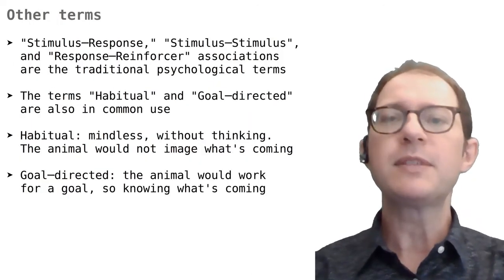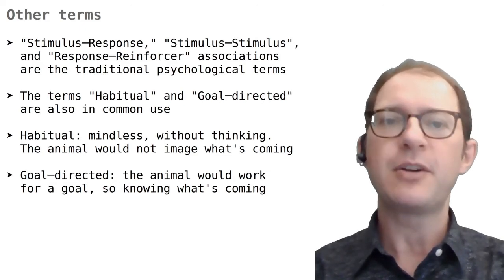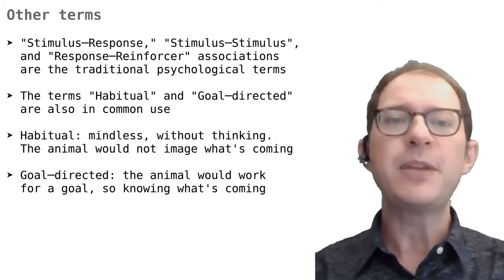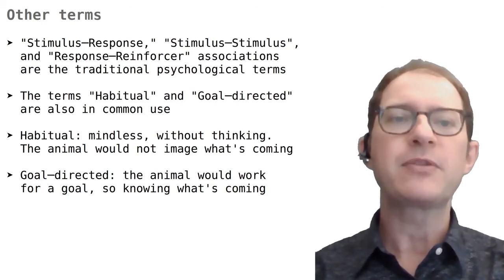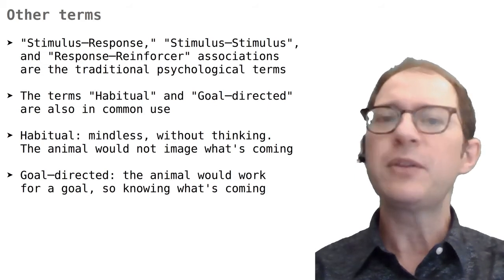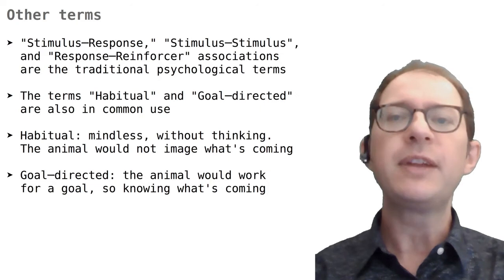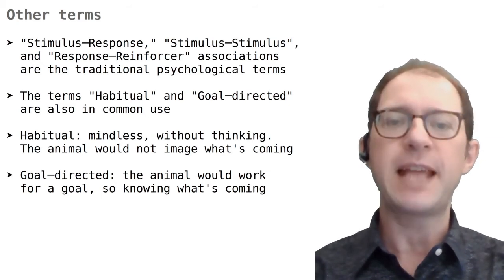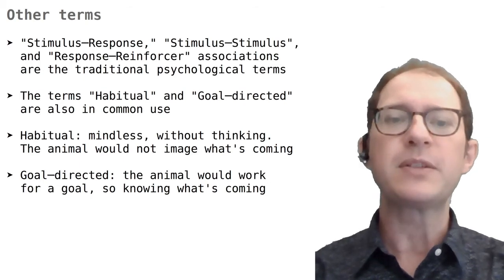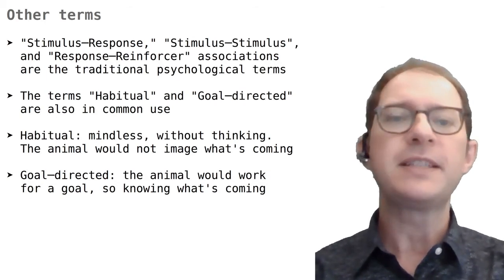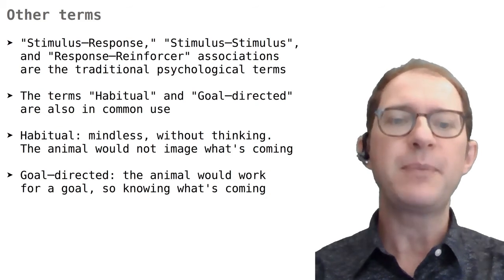The terms stimulus-response and stimulus-stimulus association have been used since the dawn of experimental psychology. Nowadays it is also popular to talk about habitual and goal-directed learning. An animal that behaves habitually would do things kind of mindlessly, just repeating the same actions over and over without reflection. This is close to the traditional stimulus-response learning, where the US and the reward do not figure once learning has taken place. On the other hand, a goal-directed animal would have in mind what's going to happen to pursue its own goals. So Pavlov's dog would salivate because it knows that food is coming, and Skinner's rat would press the lever because it knows that doing so earns food.